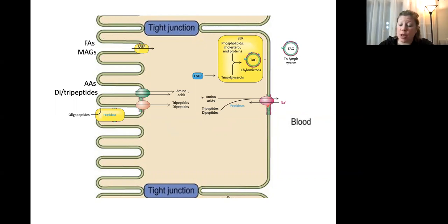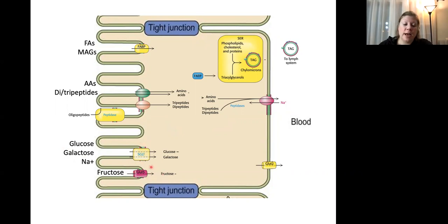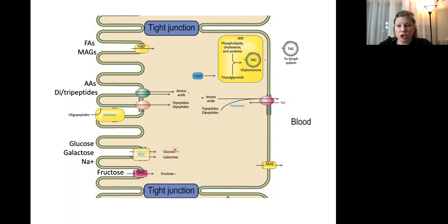Once inside the cell, amino acids and di- and tripeptides can be moved into the blood thanks to a sodium-amino acid antiporter on the inside wall of these epithelial cells. We've talked about symporters for glucose transport; this is an antiporter moving amino acid out when sodium moves in. For glucose, galactose, and fructose, there are a number of transporters that help move monosaccharides across the membrane. GLUT5 is a fructose-specific transport protein; SGLTs help move six-membered rings like glucose and galactose inside epithelial cells, often with sodium as a co-transporter.